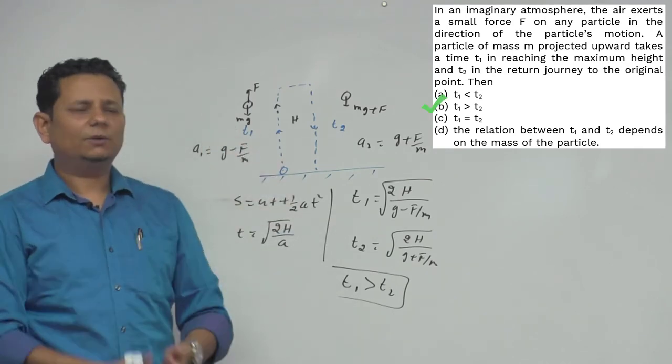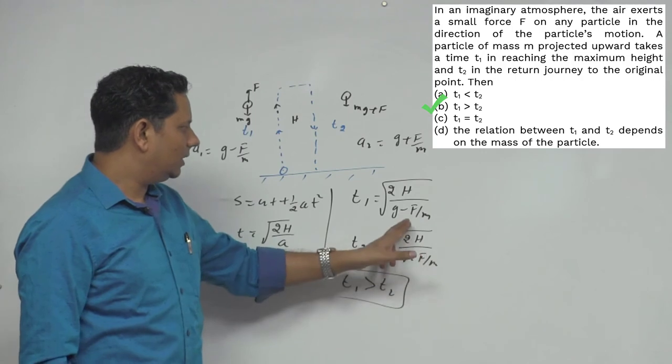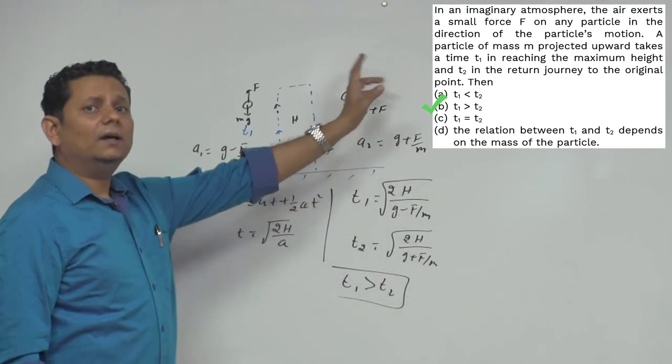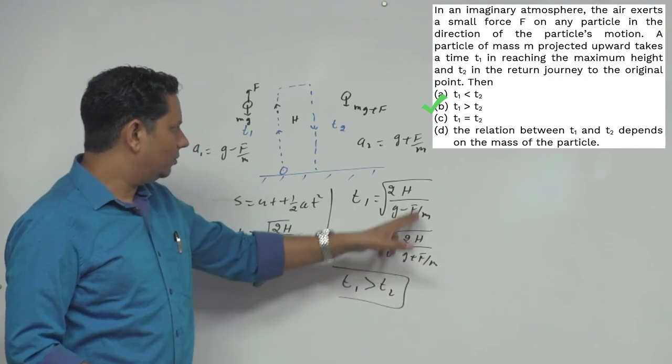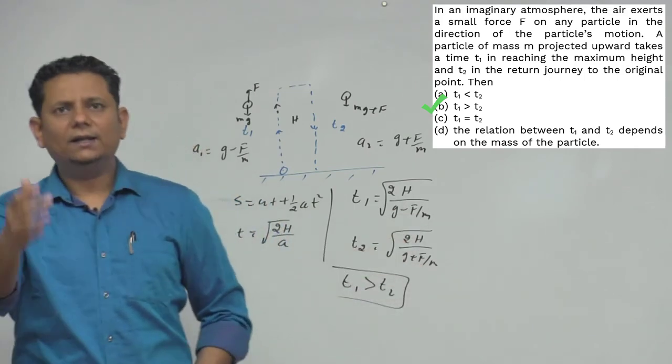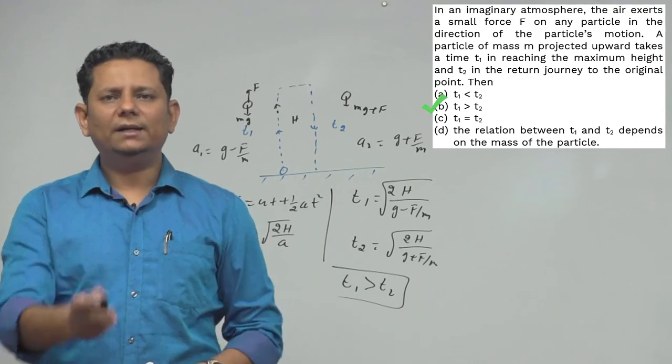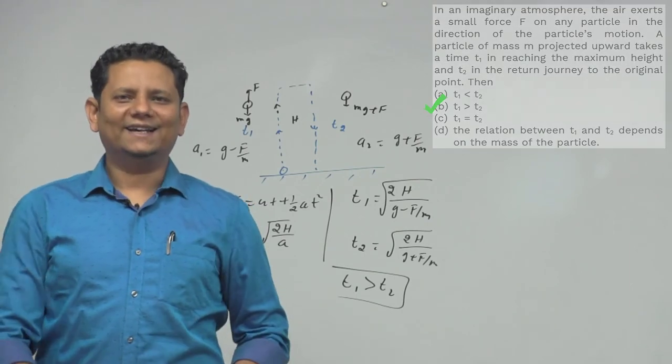In Earth's atmosphere, when both forces are zero with no external force and air resistance zero, both times become equal. So for this particular question, option B, T1 greater than T2, would be the right answer.